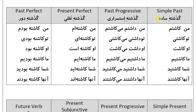Simple past: من کاشتم، تو کاشتی، او کاشت، ما کاشتیم، شما کاشتید، آنها کاشتند. Past progressive: من داشتم می‌کاشتم، تو داشتی می‌کاشتی، او داشت می‌کاشت، ما داشتیم می‌کاشتیم، شما داشتید می‌کاشتید، آنها داشتند می‌کاشتند.